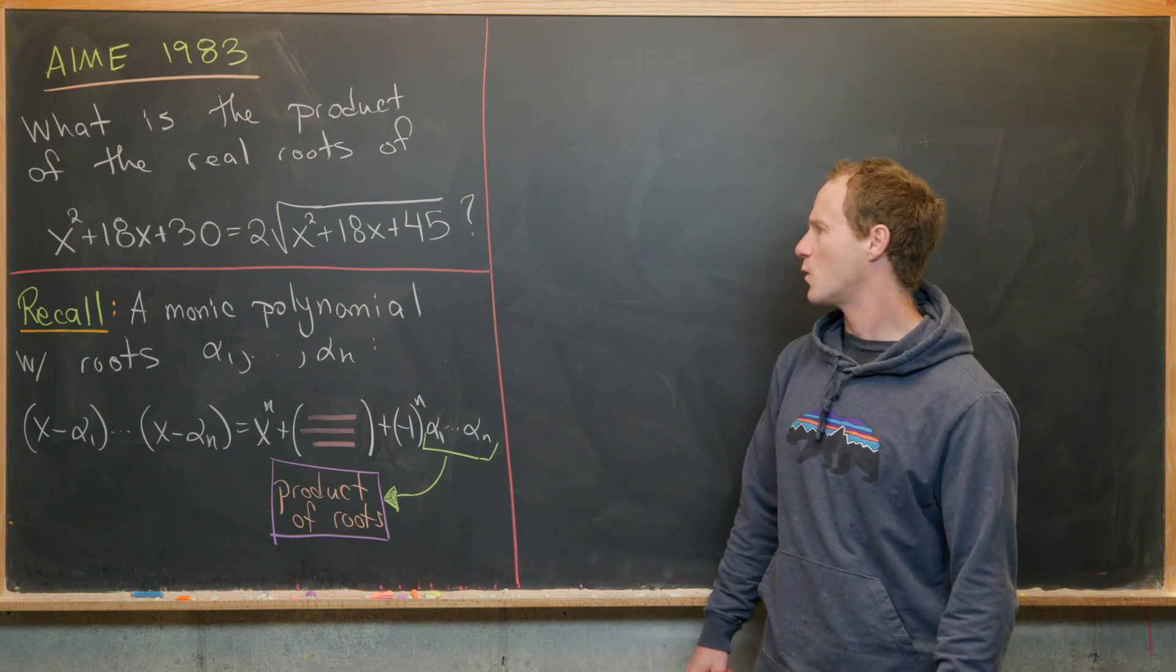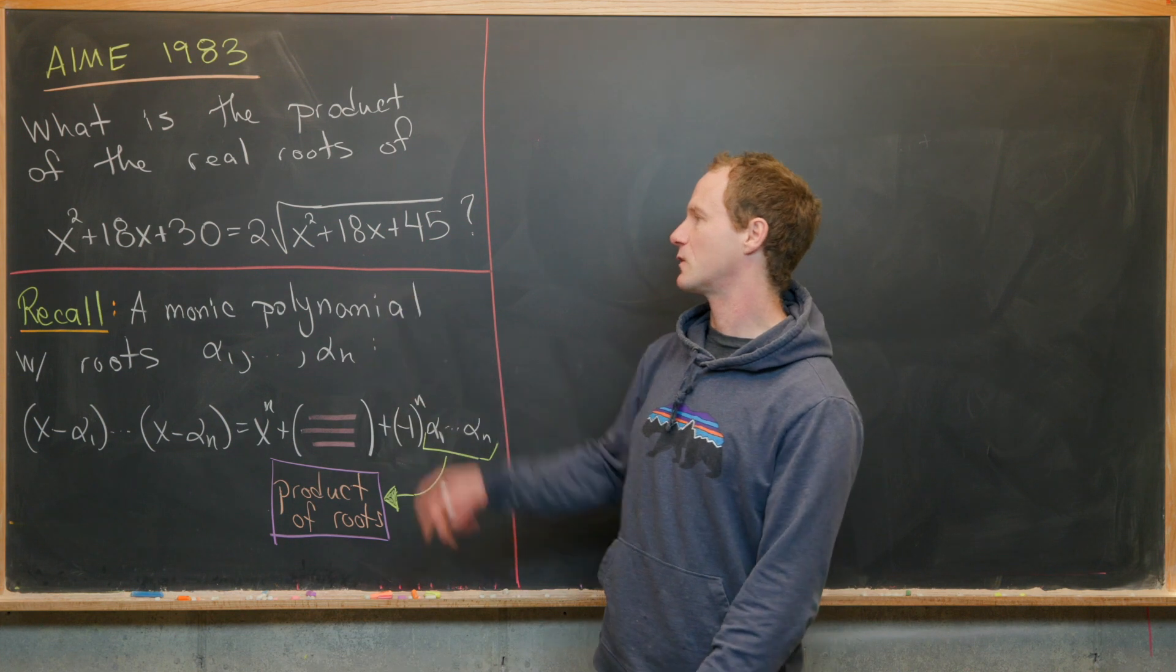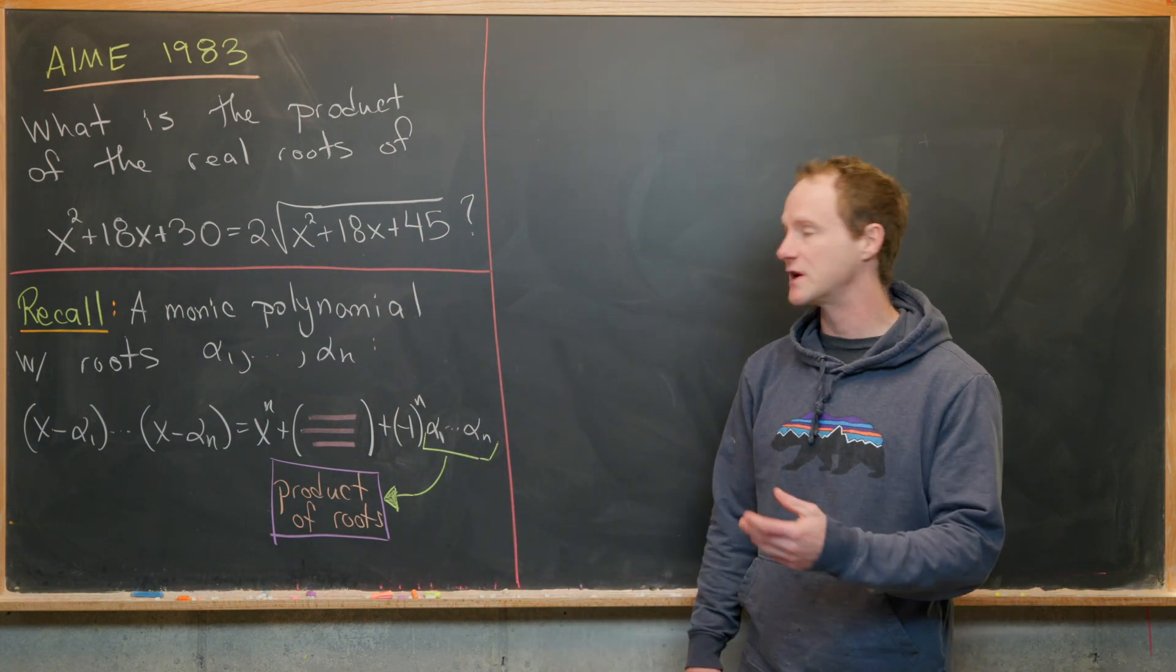The way to do this is not just to square both sides and get rid of that square root. That will leave you with something that's a little bit too hard to work with. We're going to use a trick.